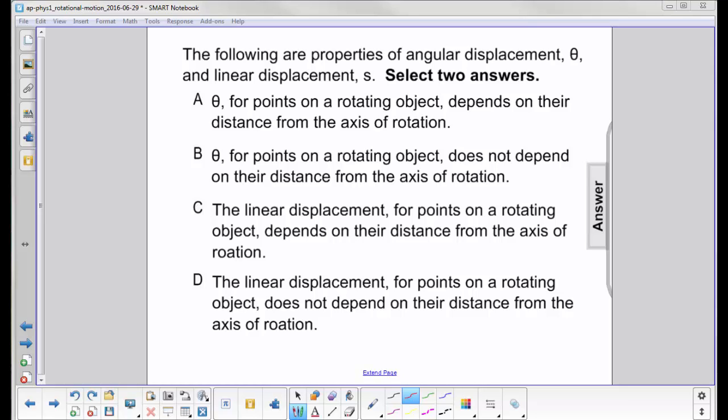The following are properties of angular displacement theta and linear displacement S. Select two answers. Let's start with the definition. So we have arc length is equal to the radius times the angular displacement.